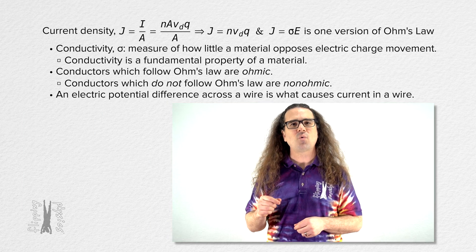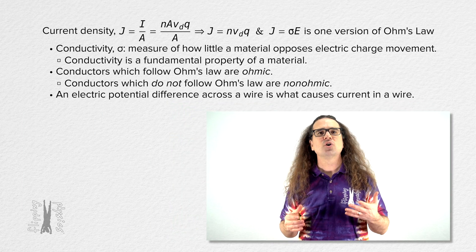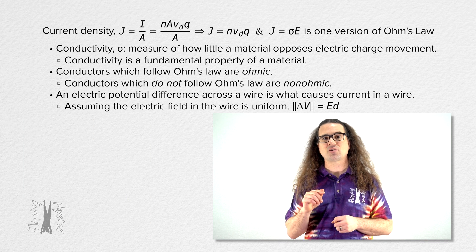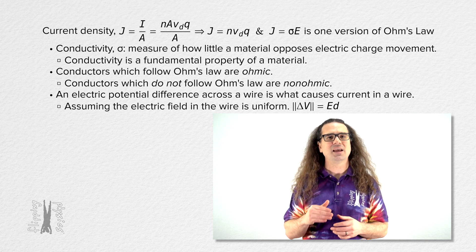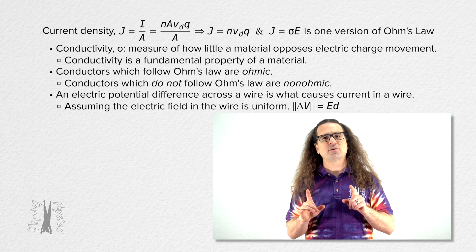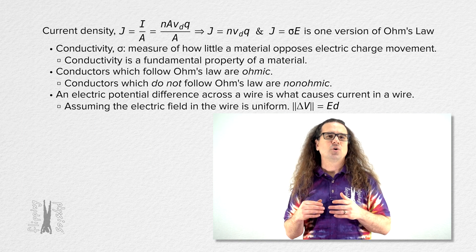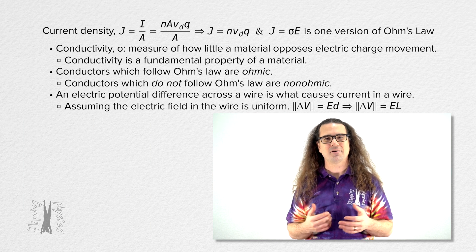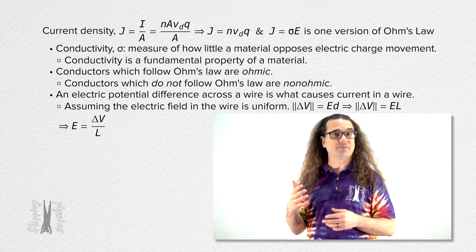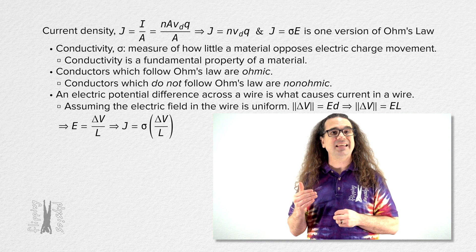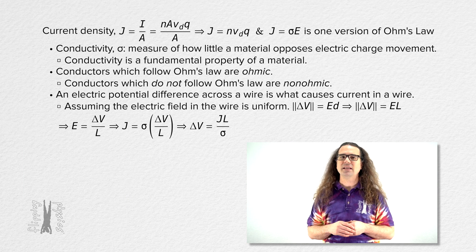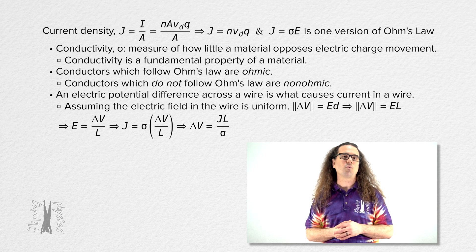An electric potential difference across a wire is what causes current in the wire, and we are assuming the electric field created in the wire is uniform. That means the magnitude of the electric potential difference across a wire equals the electric field times d, a distance parallel to the electric field. We derived that in a previous lesson. However, we will be using capital L for the length of the wire, so the electric field equals the electric potential difference across the wire divided by the length of the wire. We can substitute that in for the electric field in the current density equation, and when we solve for electric potential difference, it equals current density in the wire times the length of the wire divided by the conductivity of the wire material.